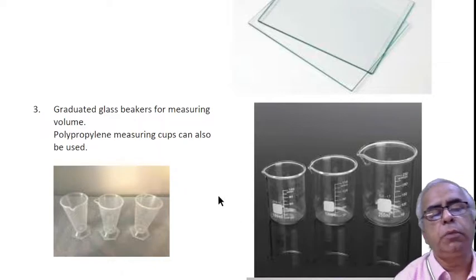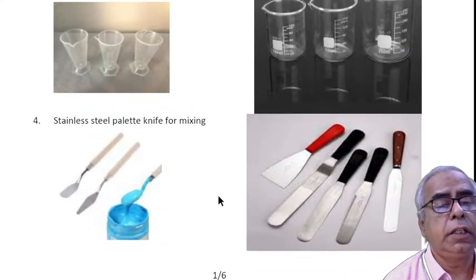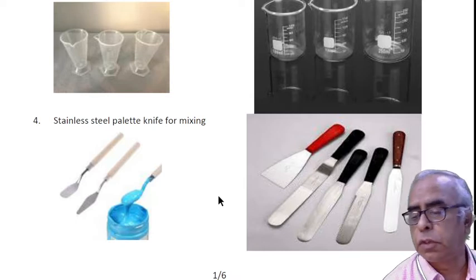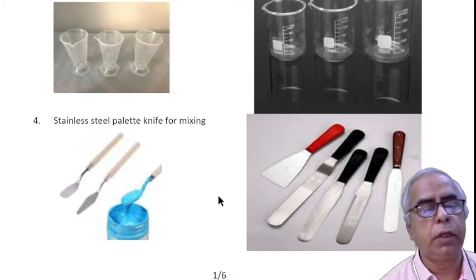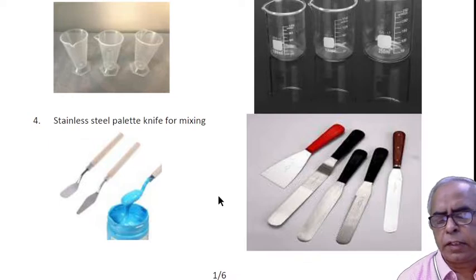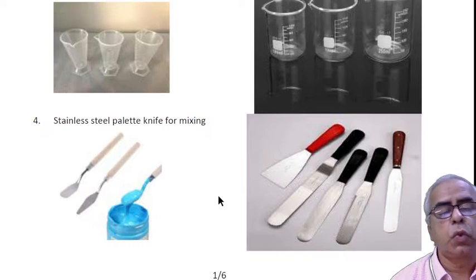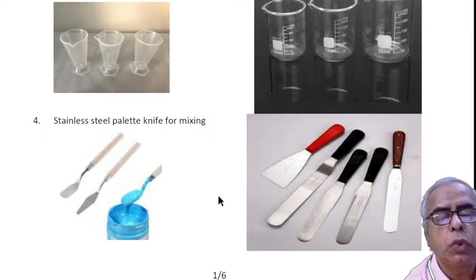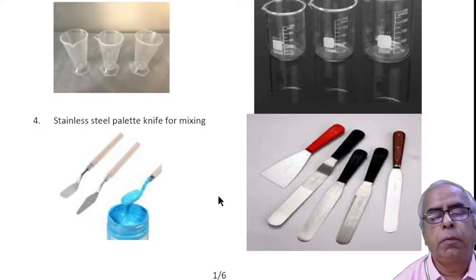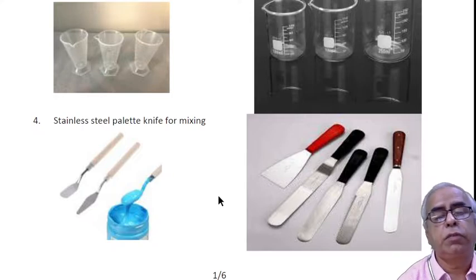If you have doubt about the presence of fluoride content in your reagents, totally avoid glass beakers. Instead, use polypropylene measuring jars and cups. The stainless steel pallet knife is also very important for mixing pigment paste or paints.